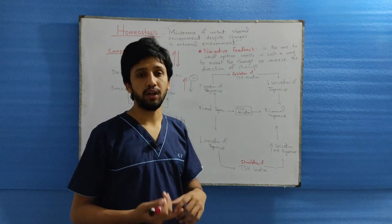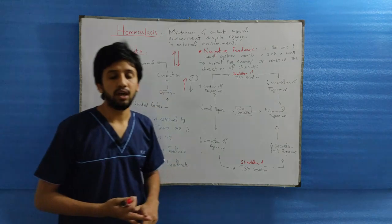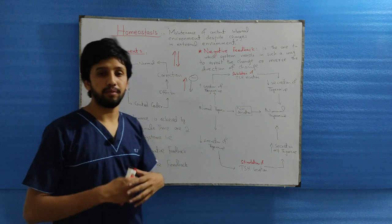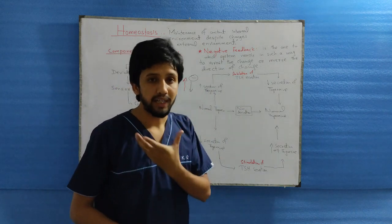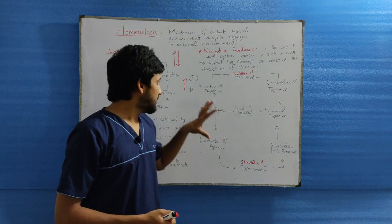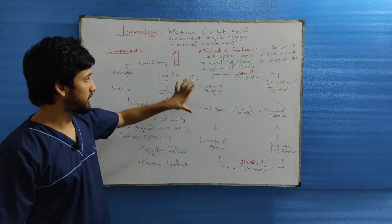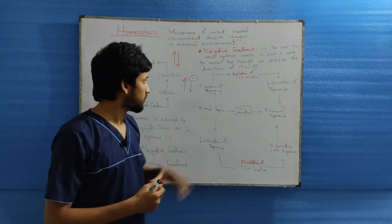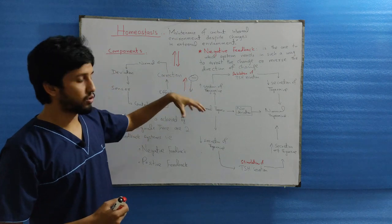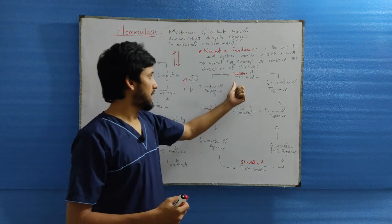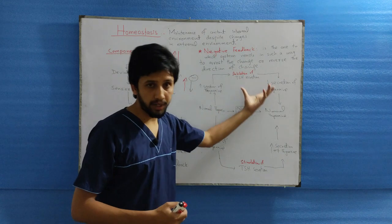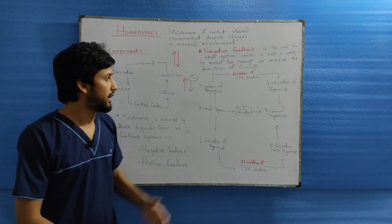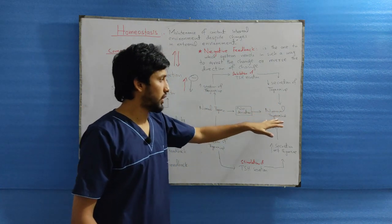TSH is the thyroid stimulating hormone. Thyroid stimulating hormone is released from the pituitary gland, which then acts on the thyroid glands and thyroxine is released. When there is increased secretion of thyroxine, there is an increased level of thyroxine in the blood. A negative signal will go to the pituitary gland and TSH secretion will be inhibited, decreasing thyroxine secretion and returning it to normal.